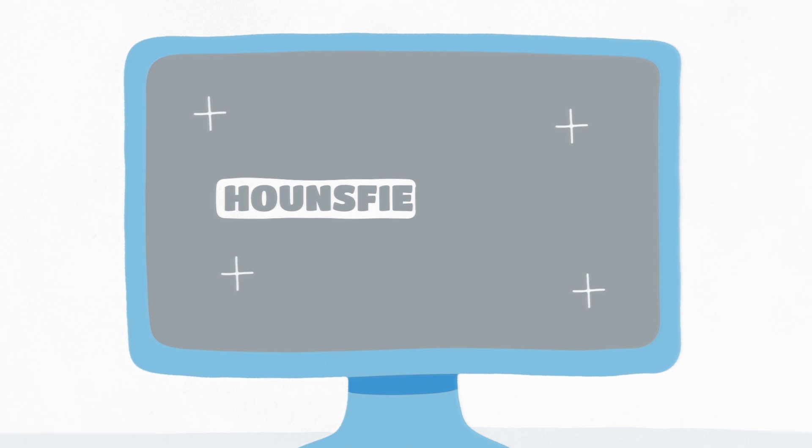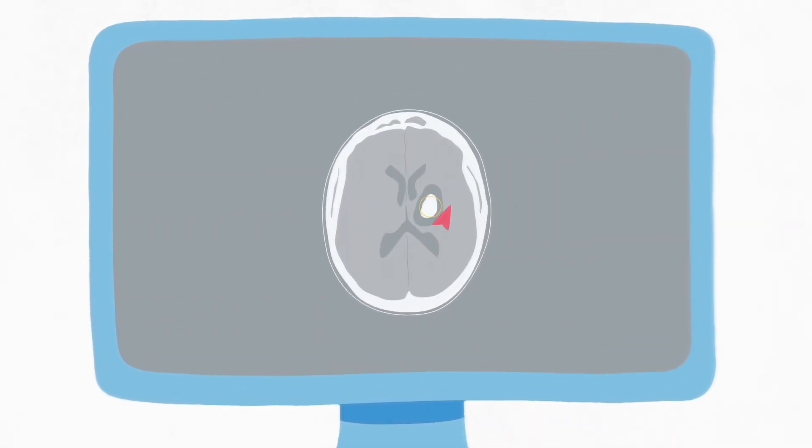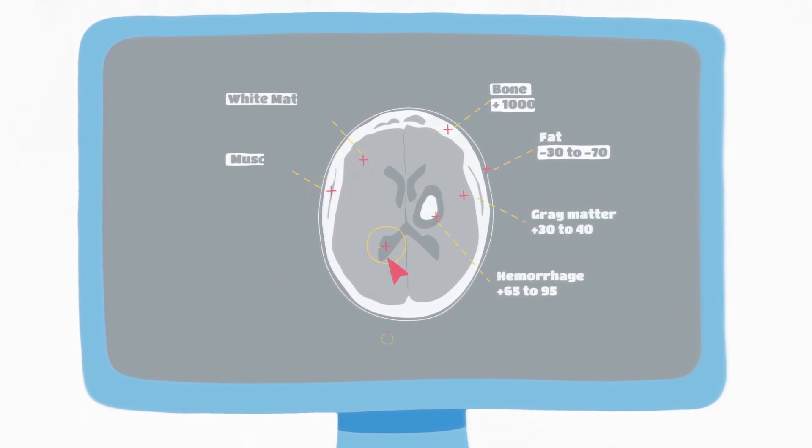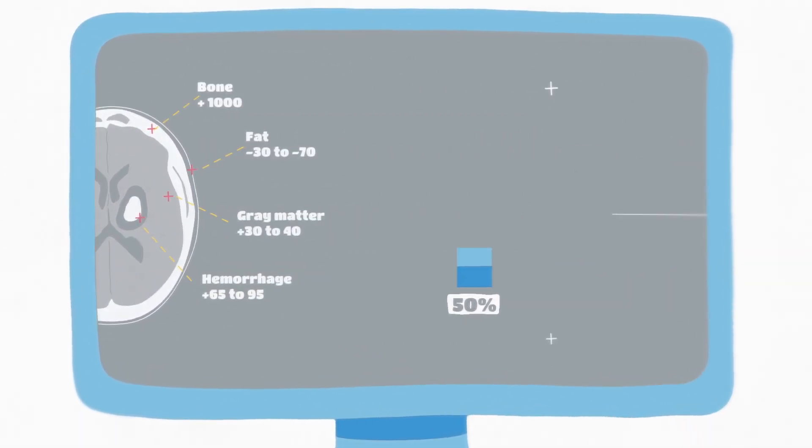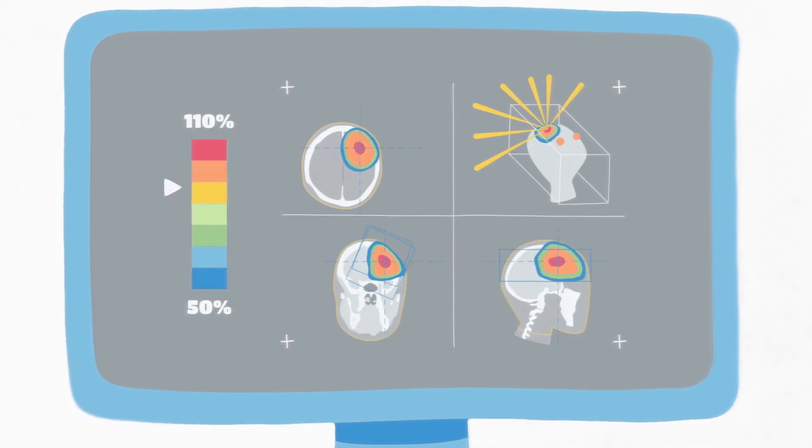The CT scans also help to calculate something called Hounsfield units, which show the densities of different tissues. This offers information about how radiation will propagate through the brain to better optimize its effects.